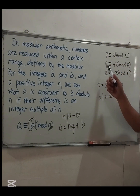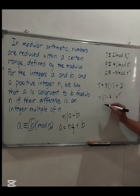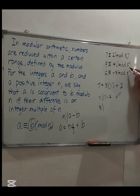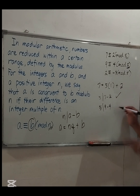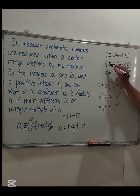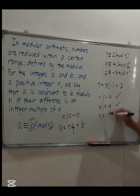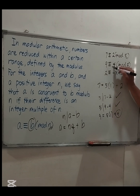Another example: 9 is congruent to 4 modulo 5. This is true because 5 divides their difference 9 minus 4, which is 5. So 5 divides 5. We can also write 9 = 5 × 1 + 4, confirming the remainder is 4.